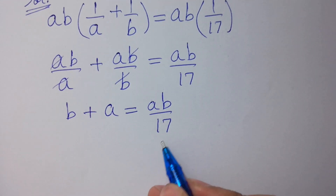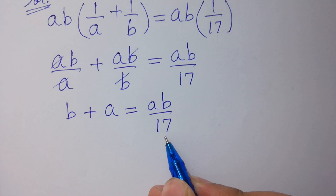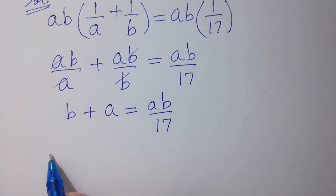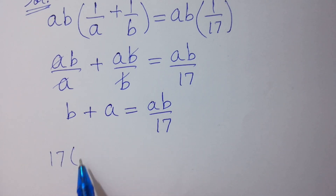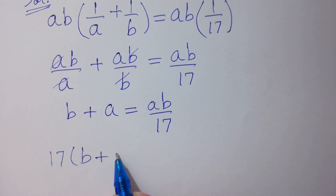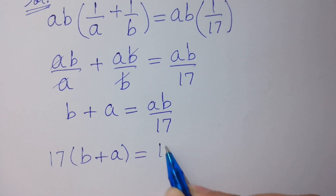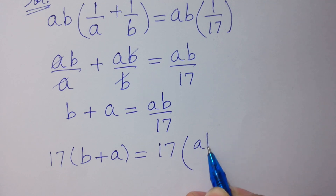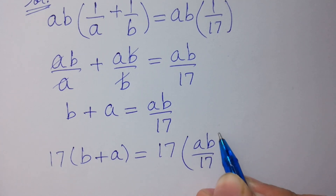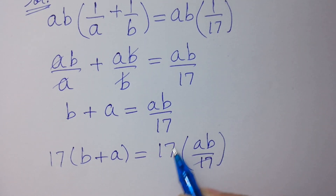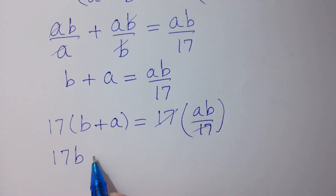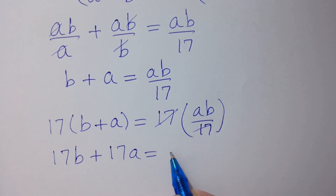To get rid of 17, we multiply both sides by 17. So 17 times (b plus a) equals 17 times ab over 17, and the 17's cancel, giving us 17b plus 17a equals ab.